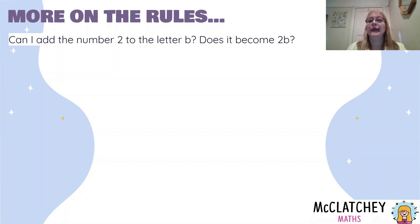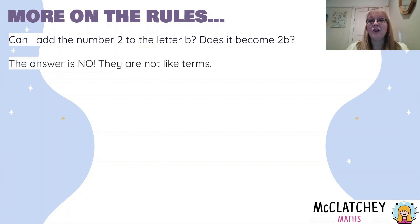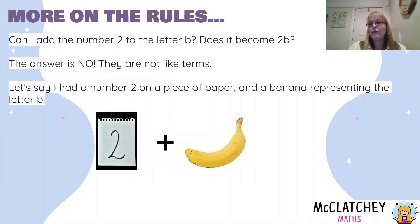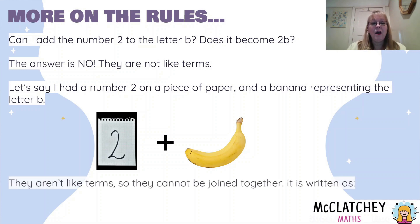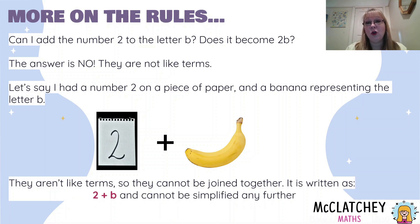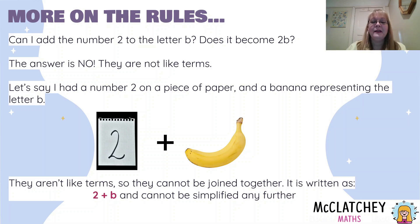Can I add the number 2 to a letter B? Does it become 2B? Well, if you've already cottoned on that 2 and B are not like terms, you'll know that no, you can't add them together — they are not like terms, so 2 does not add to B. Let's imagine I've got a number 2 on a piece of paper and a banana representing our letter B. If I add them together, I'm still going to have a piece of paper and a banana — I don't suddenly have a papana. They don't get joined together. I would simply write it as 2 plus B because I can't simplify it any further.